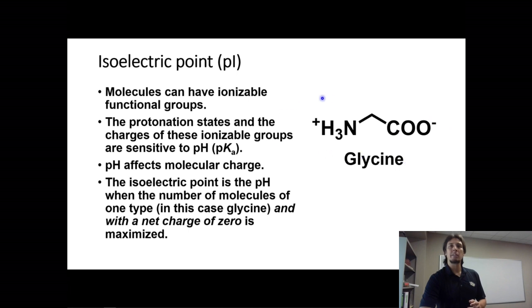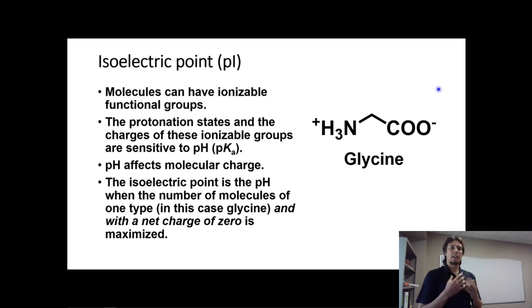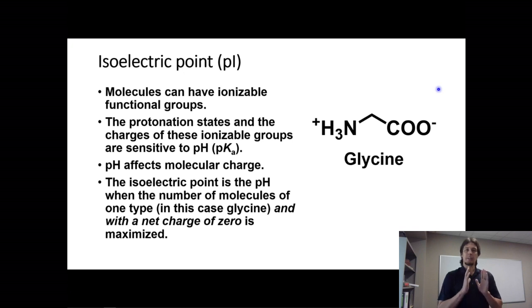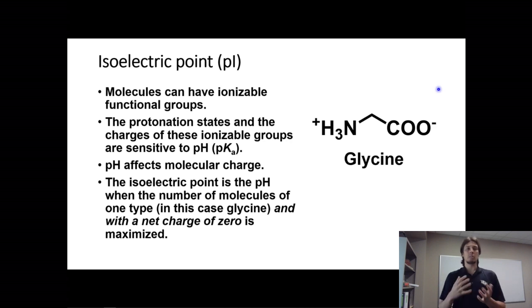This protonation state — where the amine has a positive charge and the carboxyl has a negative charge — is maximized at the isoelectric point. Remember, we're talking about a bulk solution of these molecules, not just one. When the number of molecules with a net zero charge is maximized, that's when we see the isoelectric point. This is important for a number of things including solubility.